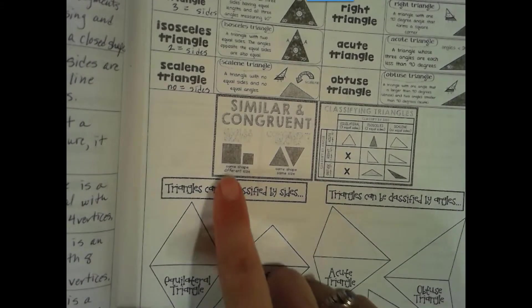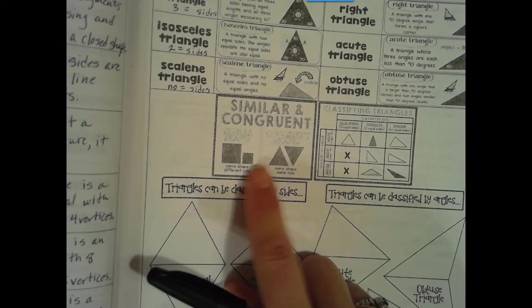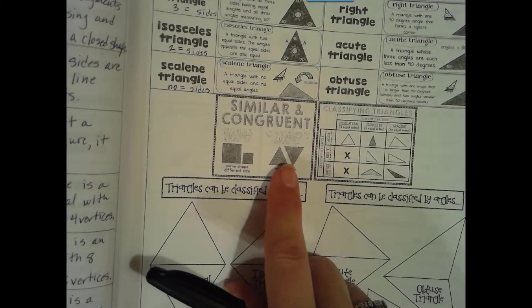So again remember similar: same shape, different size. Congruent: exactly the same shape and same size.